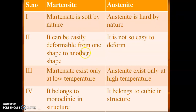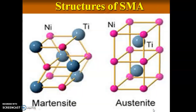Martensite can be deformed easily, while austenite does not deform easily. Martensite exists only at low temperature, while austenite exists at high temperature. Structurally, martensite belongs to a monoclinic structure and austenite belongs to a cubic structure. This is the structure diagram for an SMA material.